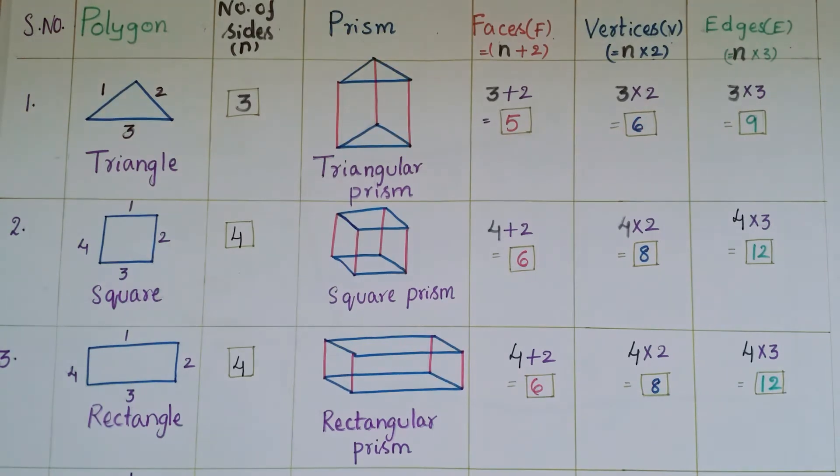And next one is square prism. For square prism we know that there are 2 congruent squares, so square is having 4 sides. So number of faces is equal to 4 plus 2 that is 6, and vertices is equal to 4 into 2 that is 8, and edges are 4 into 3 that is 12.